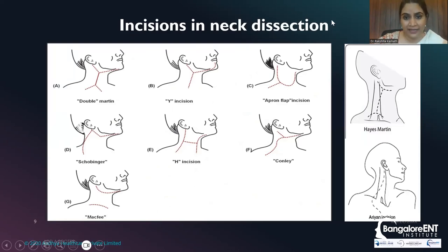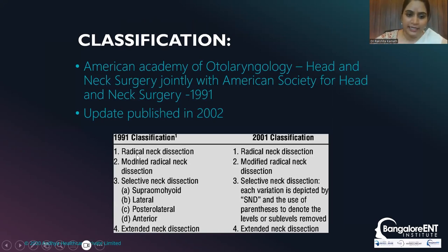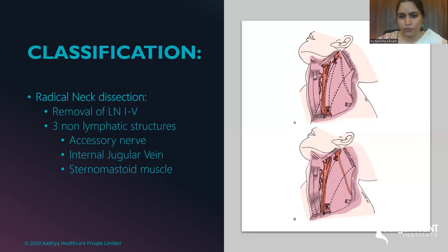The classification of neck dissection according to AOHNS in 1991, updated in 2002, has slight differences. Initially in 1991 they described radical neck dissection, modified radical neck dissection, selective neck dissection subdivided into four parts, and extended neck dissection. In 2002, each selective neck dissection variant was depicted as SND with parentheses denoting the levels or sublevels removed — a very significant change that is how we notate all cases thereafter.